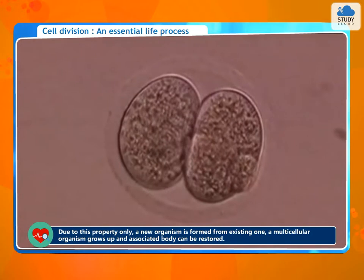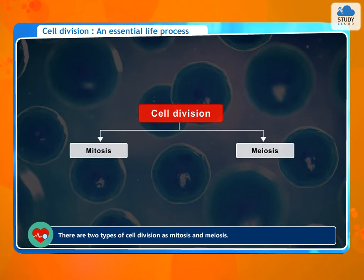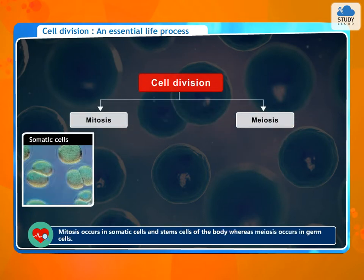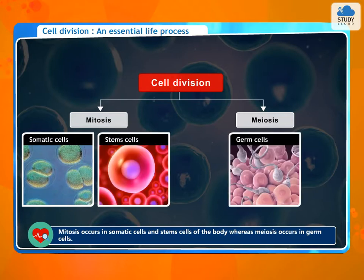There are two types of cell division: mitosis and meiosis. Mitosis occurs in somatic cells and stem cells of the body, whereas meiosis occurs in germ cells.